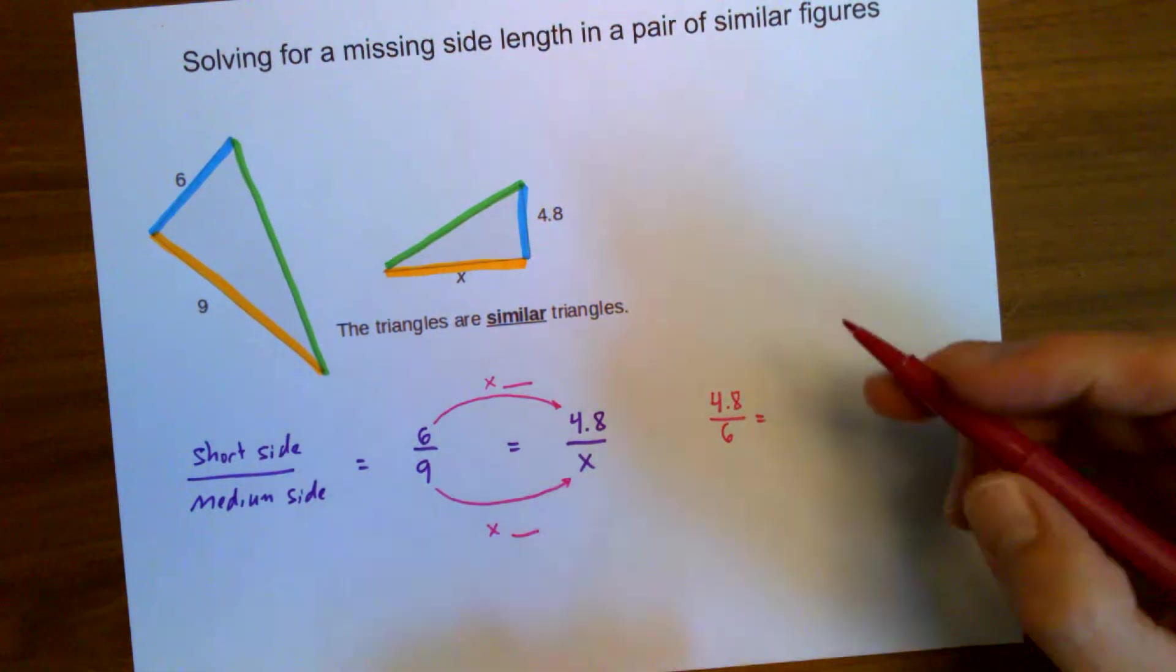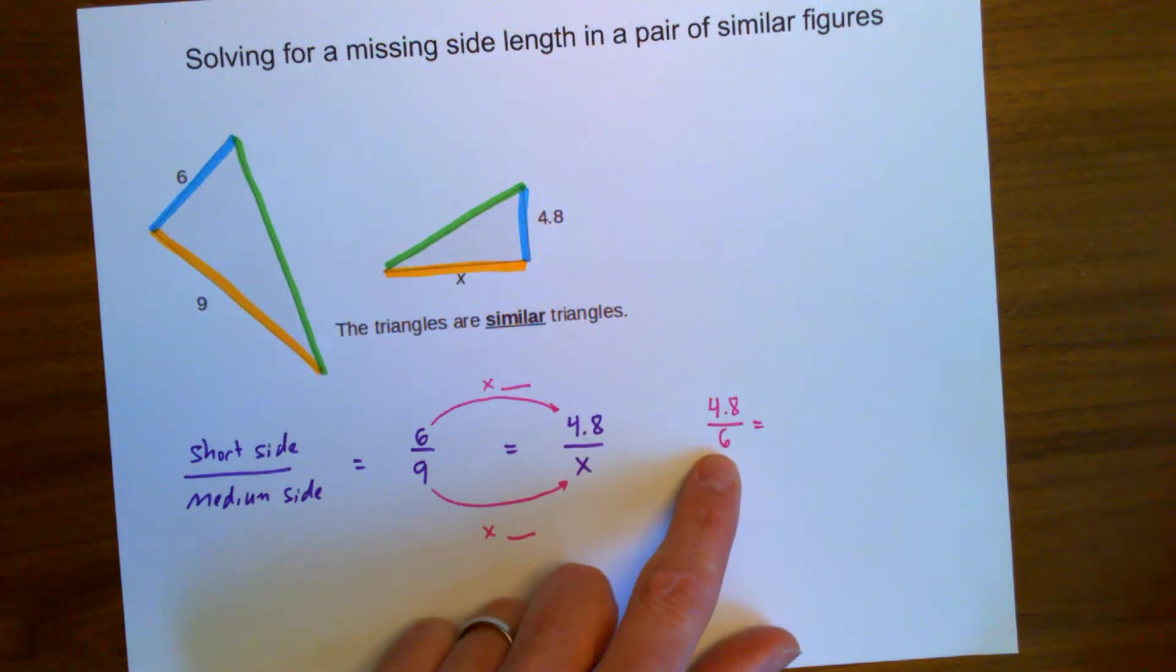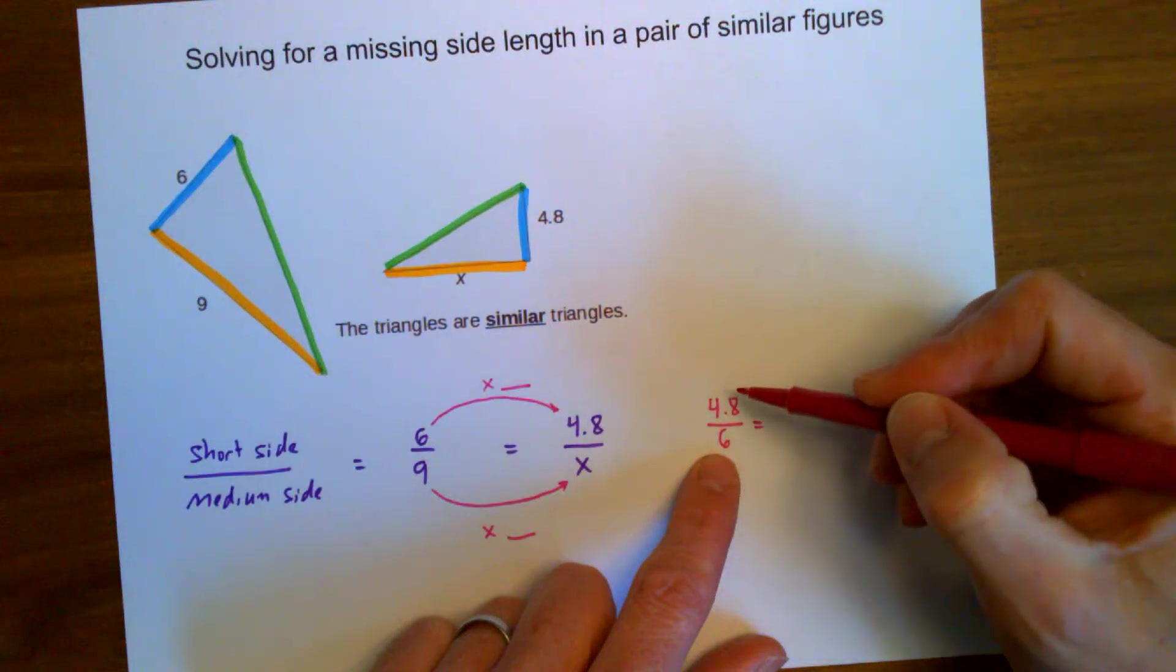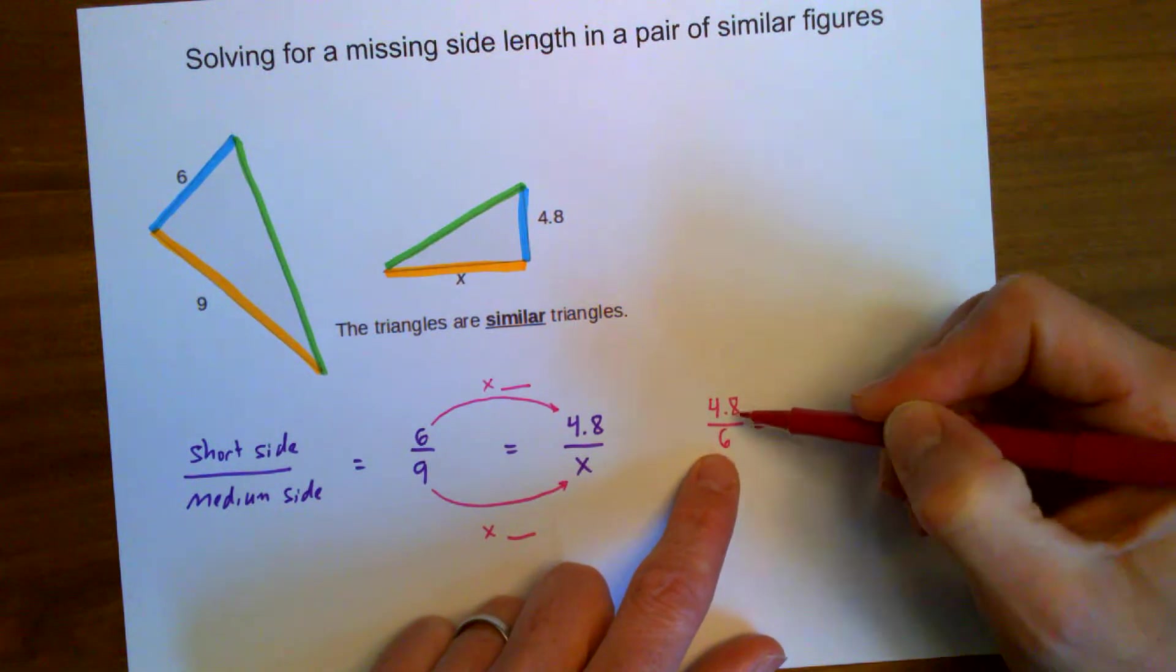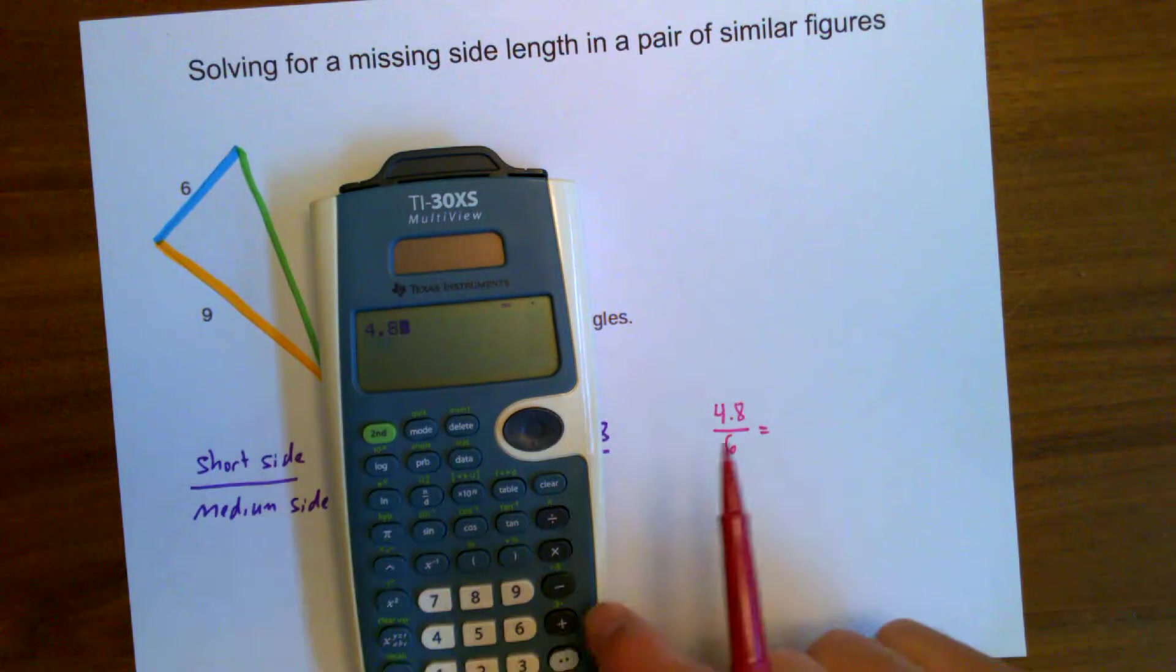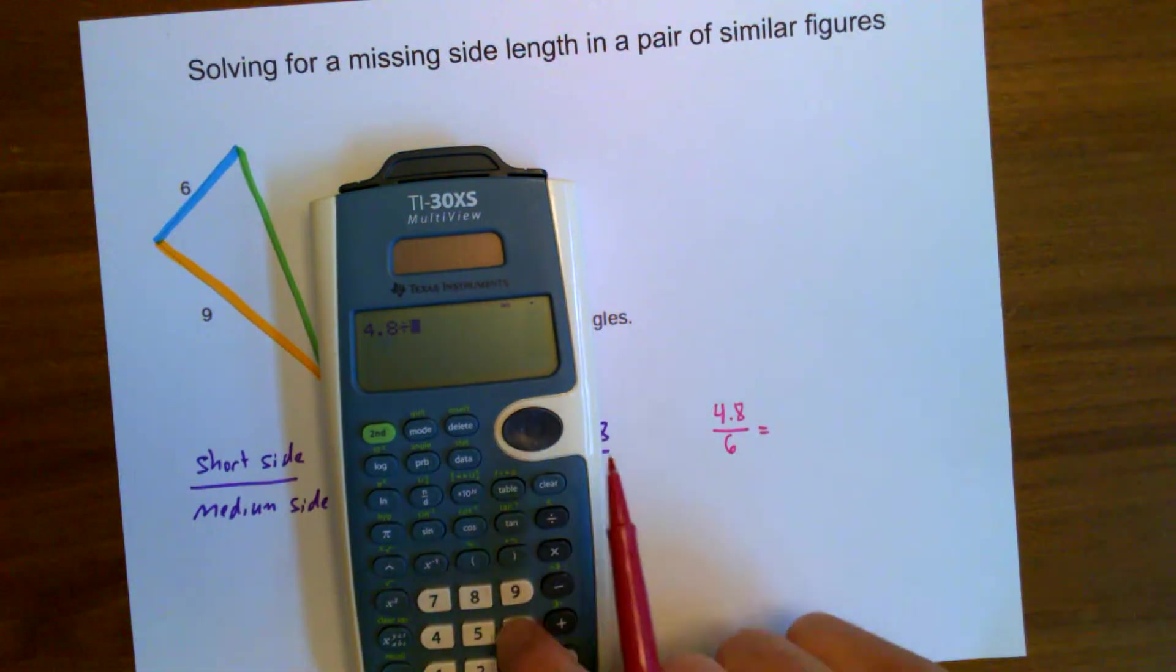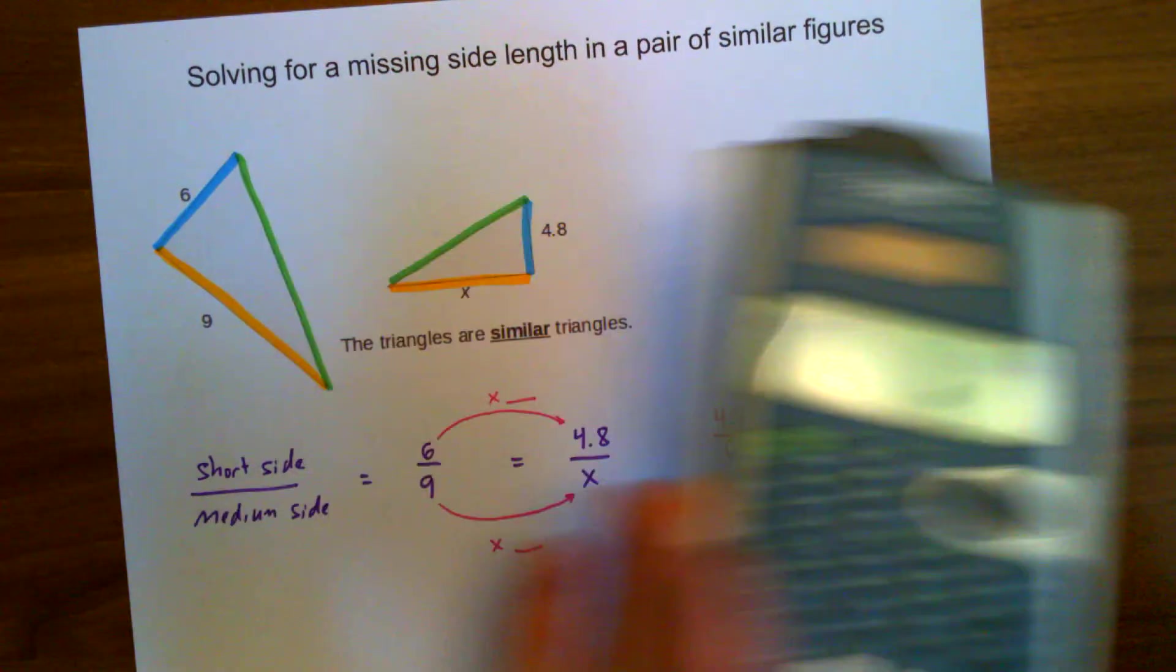So I can use my calculator at this point. By the way, I also just based on the numbers here, I know that 6 times 8 is 48. So 6 times 0.8 or 8 tenths should give me 4.8. But just to confirm, let's check 4.8 divided by 6 equals 0.8, 8 tenths.